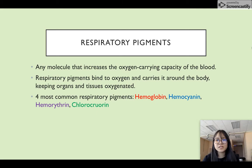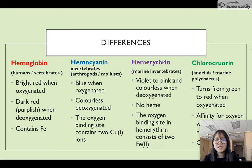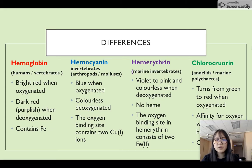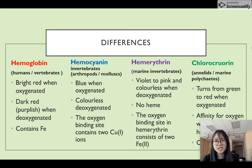The four most common respiratory pigments are hemoglobin, hemocyanin, hemerythrin, and chlorocruorin. Hemoglobin is found in humans and vertebrates. It is bright red when oxygenated, dark red or purplish when deoxygenated, and contains iron. Hemocyanin is found in invertebrates such as arthropods and mollusks. It is blue when oxygenated and colorless when deoxygenated, with an oxygen-binding site containing two copper ions. Hemerythrin is found in marine invertebrates. It is violet to pink when oxygenated and colorless when deoxygenated, has no heme group, and the oxygen-binding site contains two iron ions.